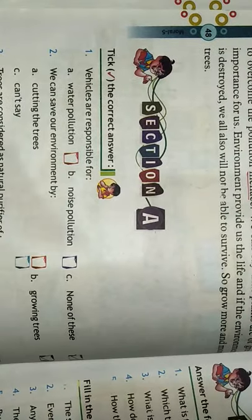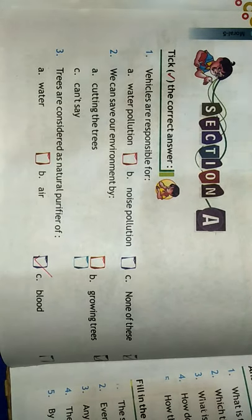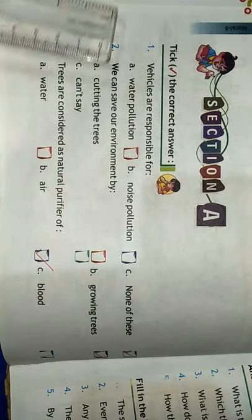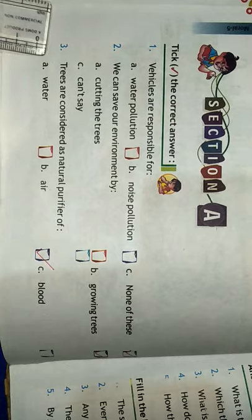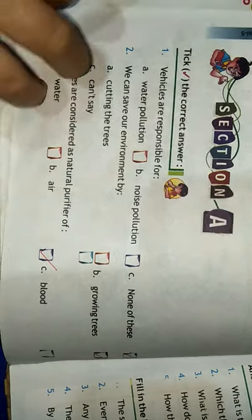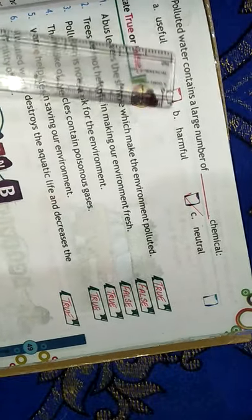Now let's do the exercises. Vehicles are responsible for air pollution — answer: none of these is incorrect; vehicles cause air pollution. We can save our environment by growing trees. Trees are considered natural purifiers of air. True or false: a bus leaves smoke which makes the environment polluted — true. Trees are not helpful in making our environment fresh — false. Pollution is not a risk for the environment — false. The smoke of vehicles contains poisonous gases — true. We are helpless in saving our environment — false. Polluted water destroys aquatic life and decreases the fertility of soil — true.